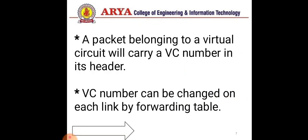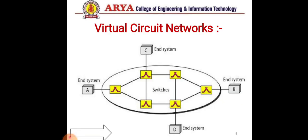A packet belonging to a virtual circuit will carry a VC number in its header. Every packet or datagram has a VC number so that the router can identify which data is transferred to which receiver. The VC number can be changed on each link by the forwarding table.